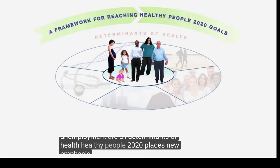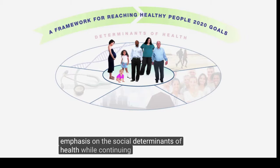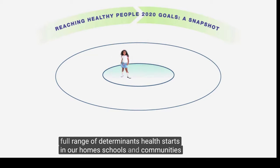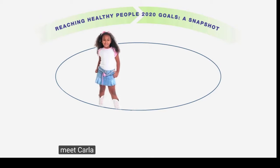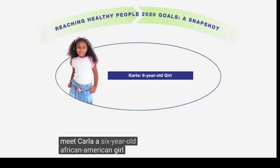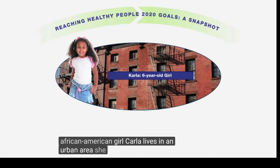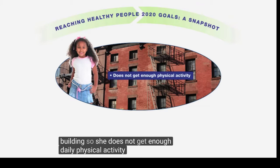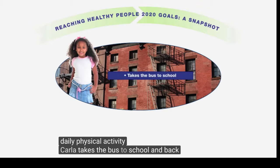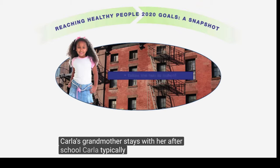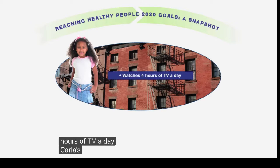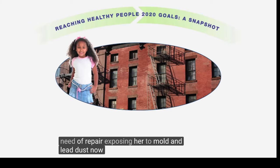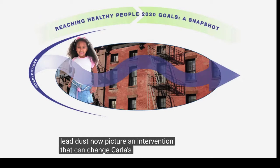Healthy People 2020 places new emphasis on the social determinants of health while continuing to address the full range of determinants. Health starts in our homes, schools, and communities. Meet Carla, a six-year-old African-American girl. Carla lives in an urban area. She doesn't have any parks or playgrounds close to her apartment building, so she does not get enough daily physical activity. Carla takes the bus to school and back, and her grandmother stays with her after school. Carla typically watches four hours of TV a day. Her apartment building is old and in need of repair, exposing her to mold and lead dust. Now picture an intervention that can change Carla's determinants of health.